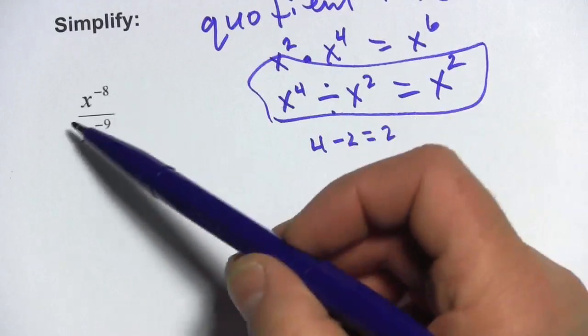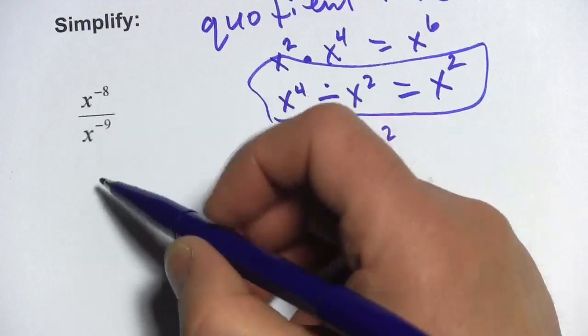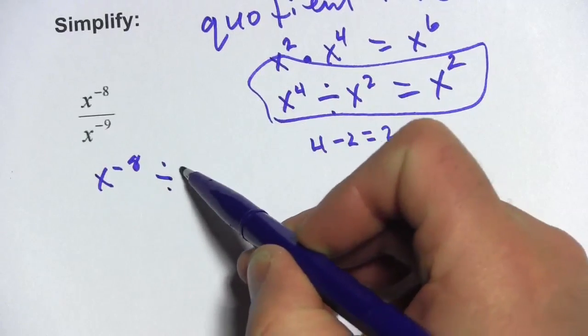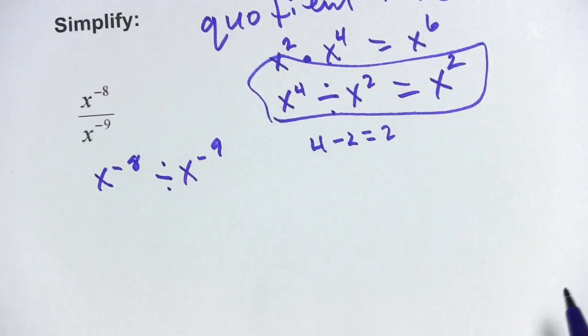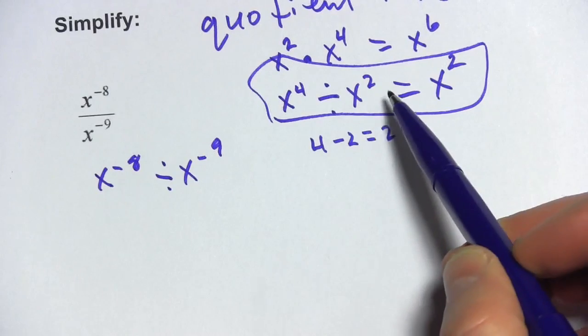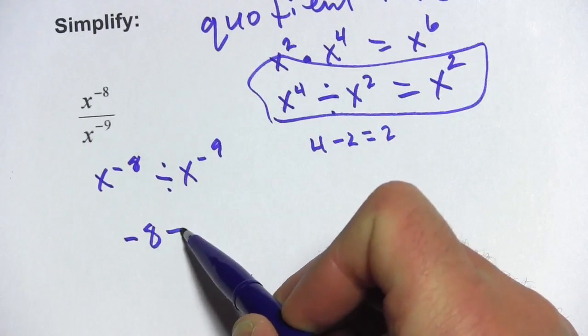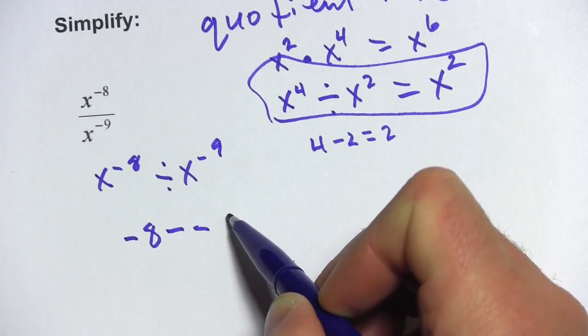In this problem, we've got a fraction here, but this is really division. You can think of this problem as x to the negative eighth divided by x to the negative ninth. And just like in this one, we're going to subtract. So really our problem is negative 8 minus a negative 9.